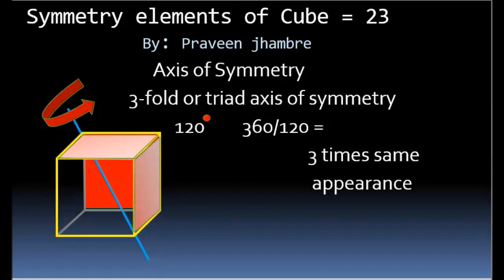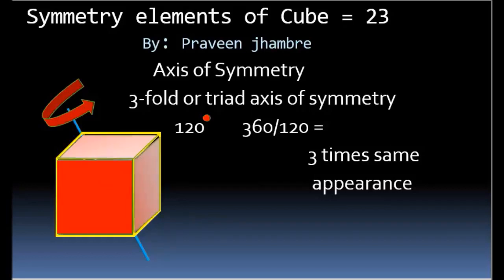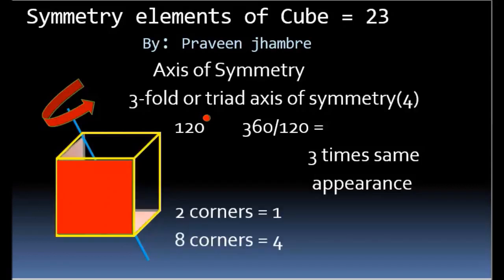The second is the triad or three-fold axis of symmetry. In this type, an imaginary axis passes through two diagonally opposite corners and also through the center of the cube. If the cube is rotated about this axis at an angle of 120 degrees, we get 360 divided by 120, that is three times the same appearance. Between two corners we have one three-fold axis, so between eight corners we have four three-fold axes of symmetry.